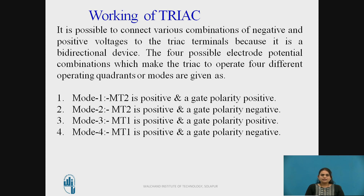The working of TRIAC: it is possible to connect various combinations of negative and positive voltages to the TRIAC terminals because it is a bidirectional device. With two terminals, we can have different polarities, giving four possible electrode potential combinations which make the TRIAC operate in four different modes. Mode 1: MT2 is positive and gate polarity is also positive with respect to MT1. Mode 2: MT2 is positive and gate polarity is negative with respect to MT1. Mode 3: MT1 is positive and gate polarity is positive with respect to MT1. Mode 4: MT1 is positive and gate polarity is negative.